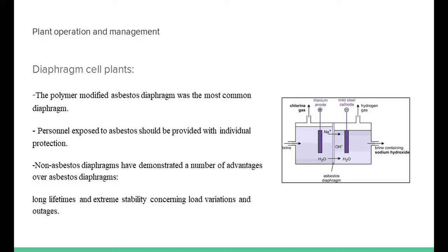Diaphragm cells slowly replaced mercury cells until in the year 2000, the polymer-modified asbestos diaphragm was the most common diaphragm cell. However, it still contains a minimum of 75% of chrysotile asbestos, the most commonly encountered form of this material, mixed with PTFE fibers, a strong chemically resistant plastic. For all of these reasons, personnel exposed to asbestos should be provided with individual protection equipment and personal health check program.